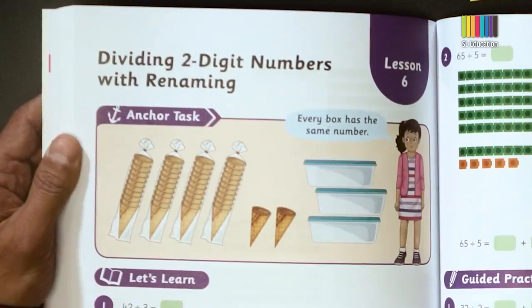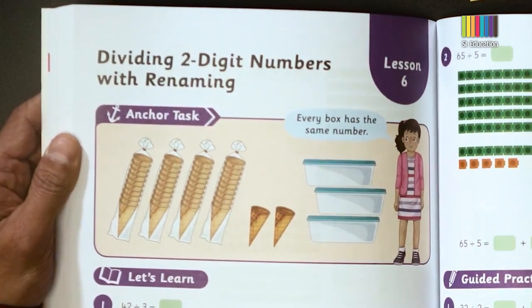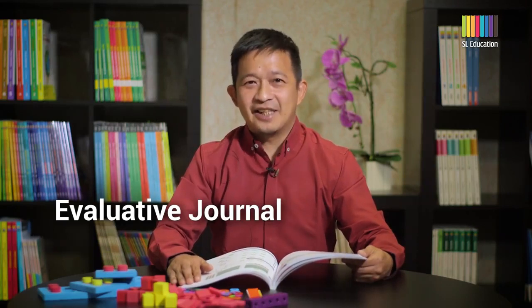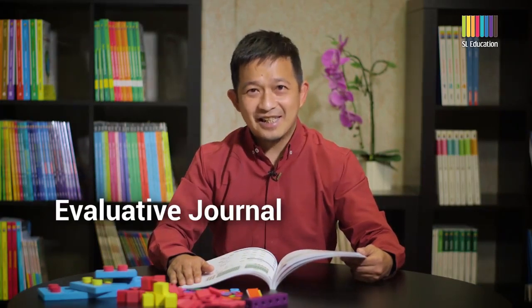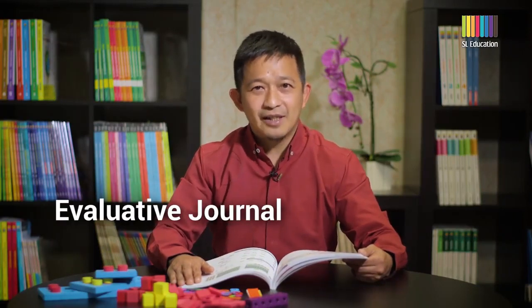A second type of journal is evaluative journals. During the lesson, the class may have discussed a variety of ways to solve a problem. Some may have decided to split 42 into 30 and 12, others may have split it into 24 and 18. Afterwards, the teacher may invite students to compare and evaluate between the two methods, with the journal prompt being: which method do you prefer and why? In evaluative journals, students focus on evaluating between methods of solution.